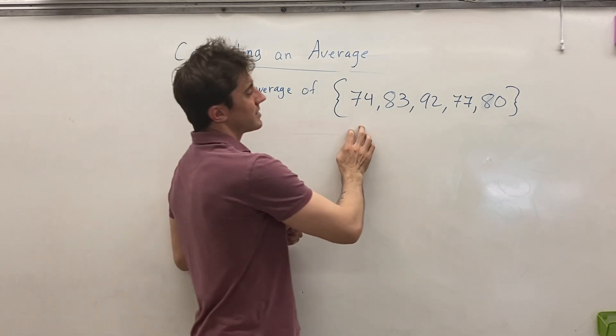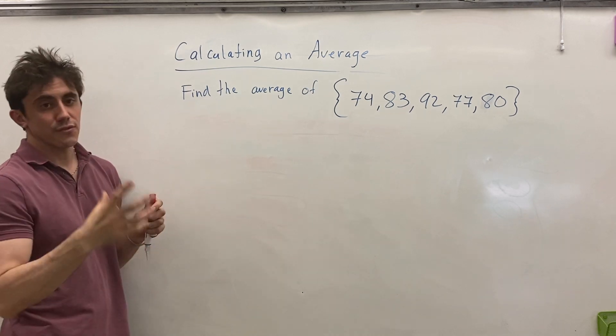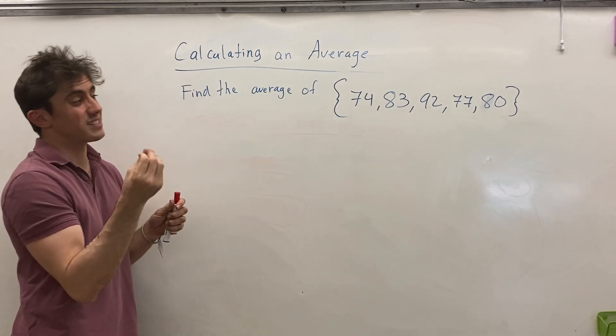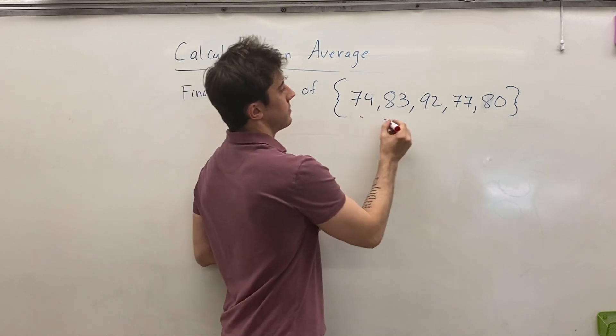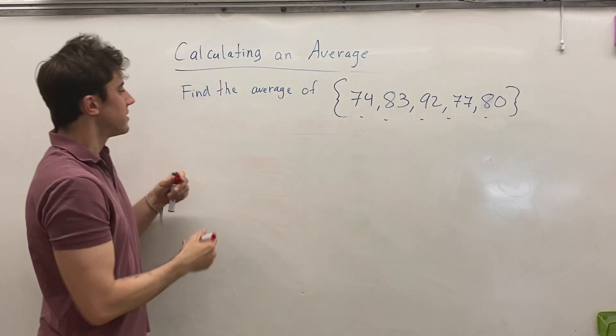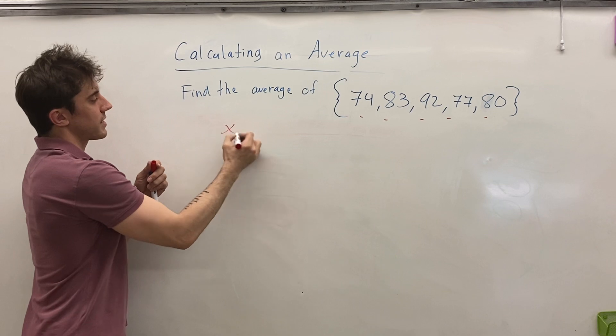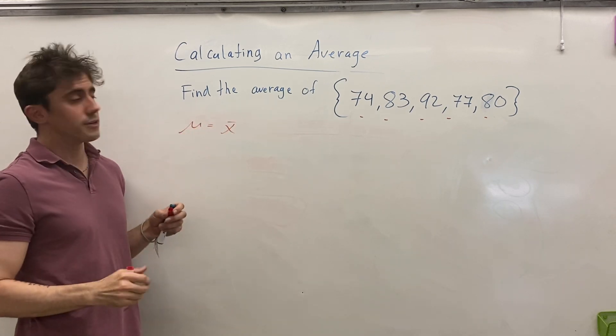So if we're taking the average of this set of five points, we're going to look for the sum of the five points, and we're going to divide that sum by the number of points in the set. In this set, that will be divided by five. And so in math, we usually call the average x bar, sometimes we call it mean, depending on which textbook you're using.